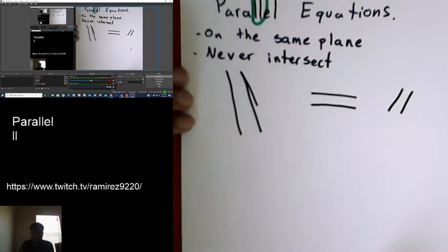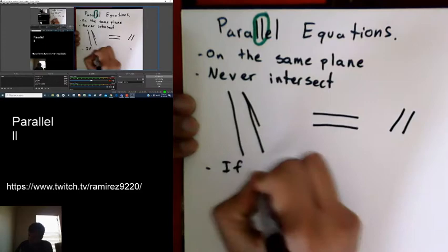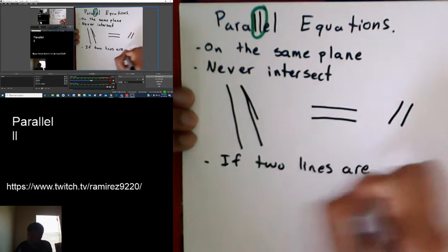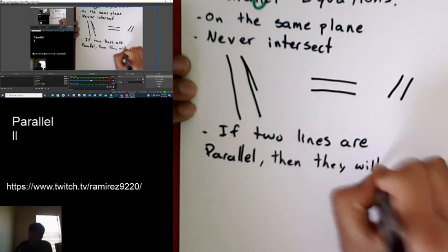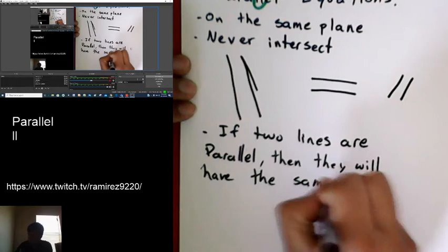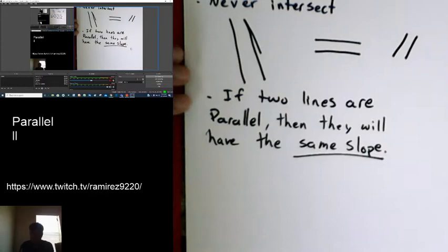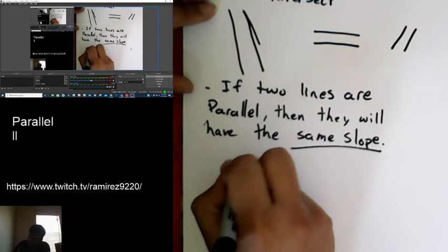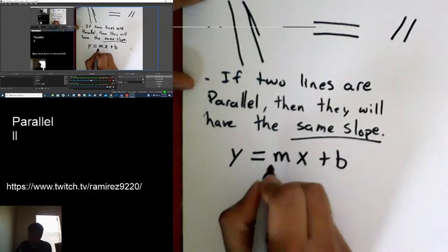Now on to the equations themselves. We will find out that if two lines are parallel, then they will have the same slope. And I want to remind you guys that slope is what comes before the variable x. This is important—they're going to have the same slope. When we're looking at the equation, we always compare it when it looks like y equals mx plus b, where m is your slope.